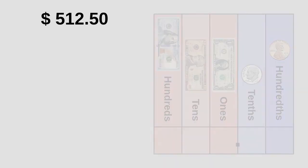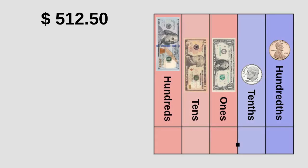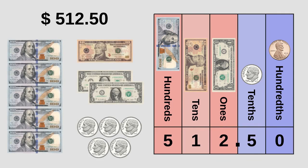Let's look at another example. Suppose we want to know what bills and coins we need to make 512 dollars and 50 cents. We use our place value chart: we put the two in the ones column, the one in the tens column, and the five in the hundreds column. For 50 cents, we put five in the tenths column and zero in the hundredths column. As we can see, we need five 100-dollar bills, one 10-dollar bill, two 1-dollar bills, five dimes, and no pennies.